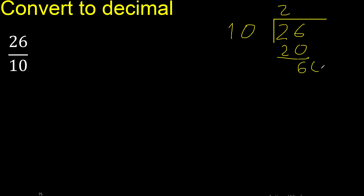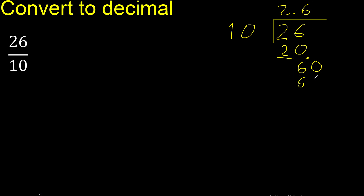Therefore complete with 0 and place a decimal point here. Then bring down to get 60. Multiply by which number: 6 multiply by 10 is 60. Subtract: 60 minus 60 equals 0. Therefore finish.